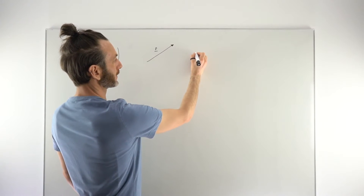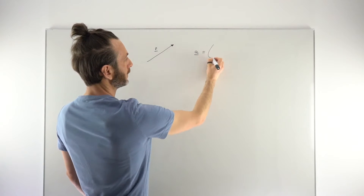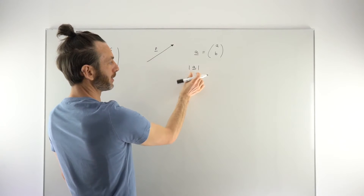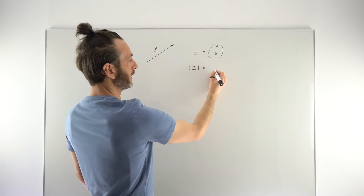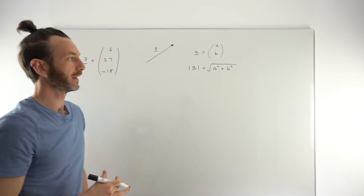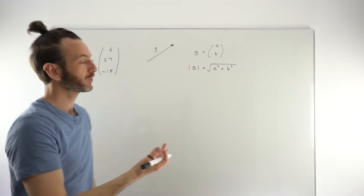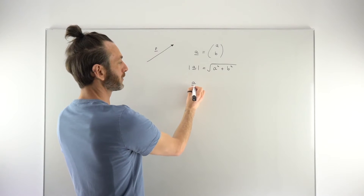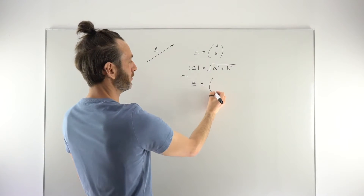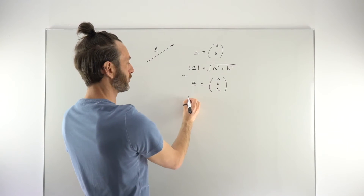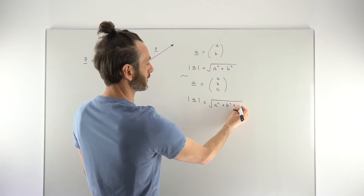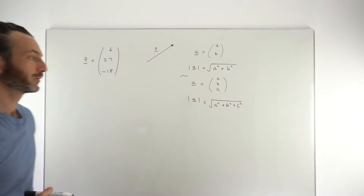So if you had a vector a with components a and b — a two-dimensional vector — then the magnitude of a, represented by the bars on the side, would be the square root of a² + b². If that looks familiar, it should — it is Pythagoras, working out the long side of a right-angled triangle. If your vector goes up to three dimensions, you just add in the extra component: the magnitude is √(a² + b² + c²). A very straightforward formula — just commit it to memory.